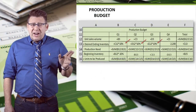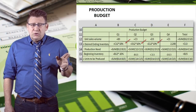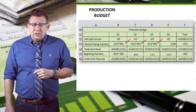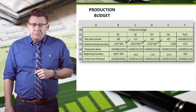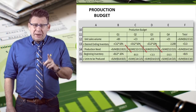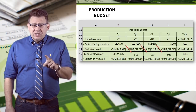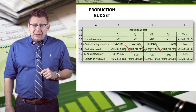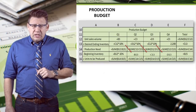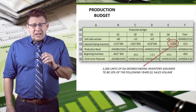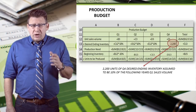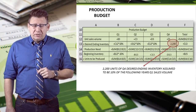Then the desired ending inventory can be a formula based on next quarter's sales volume. Beginning inventory can be a cell linked to the prior month's ending inventory. And finally, some of the numbers I've just assumed because I want to keep the examples straightforward.